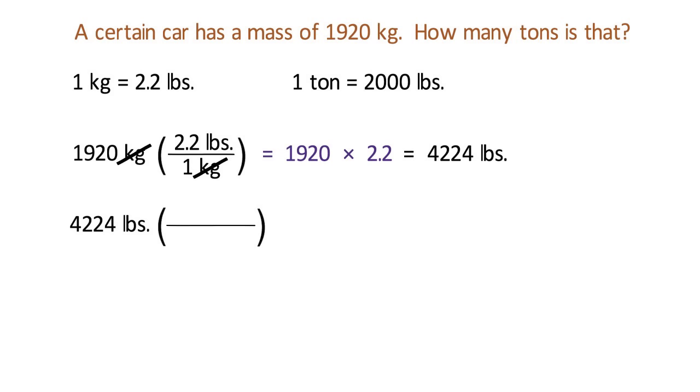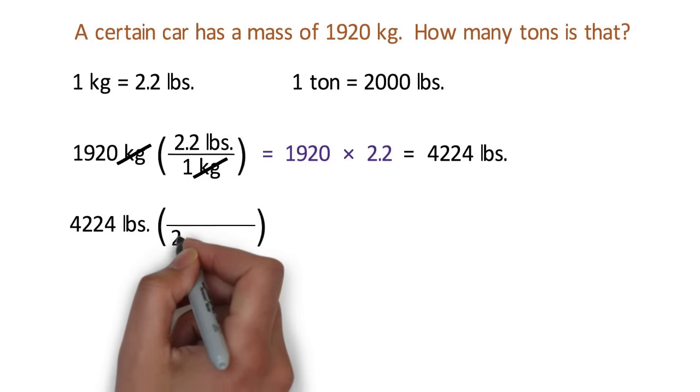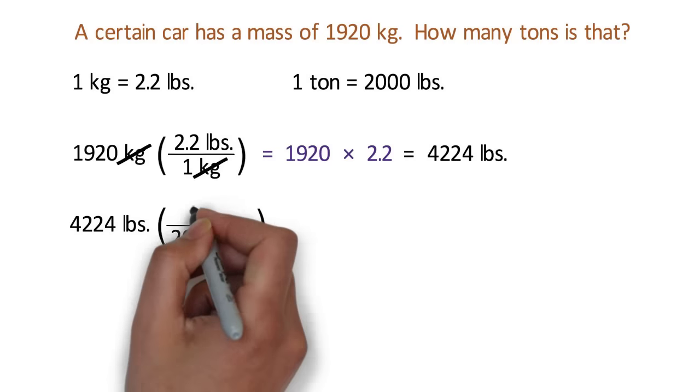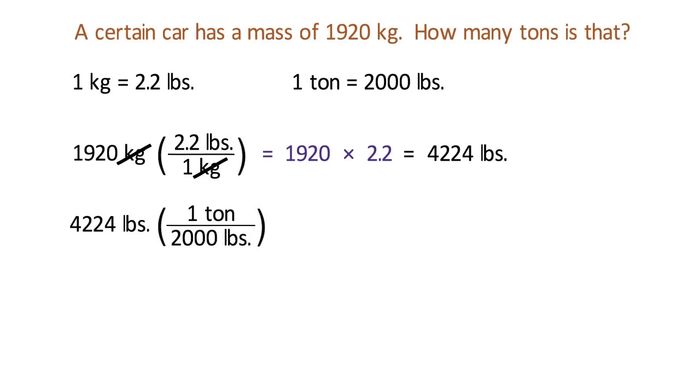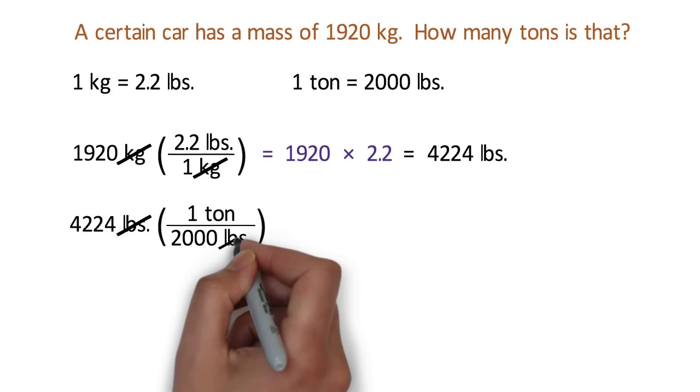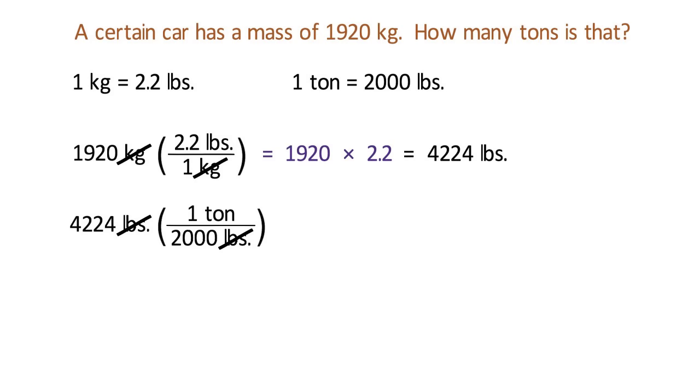We want to have pounds in the denominator of the fraction so that we can cancel out the pounds. But which pounds do we choose? 2.2 pounds or 2,000 pounds? Remember that we want to convert to tons, so we choose the conversion factor between pounds and tons. We write 2,000 pounds on the bottom and 1 ton on the top. Our pounds cancel out and we are left with tons for the units of our answer.